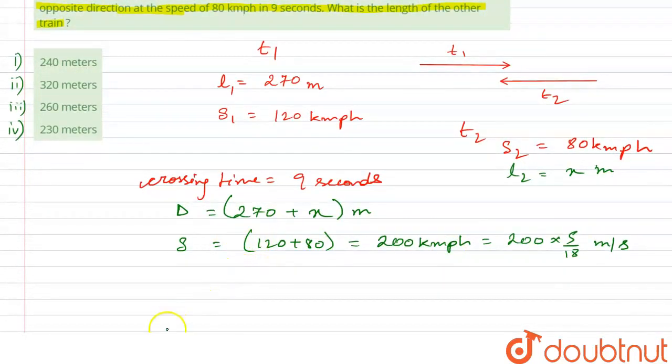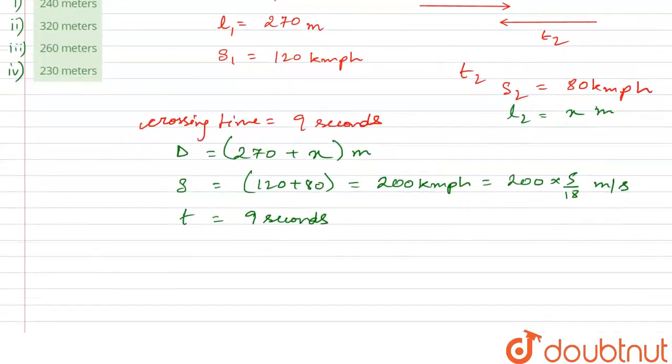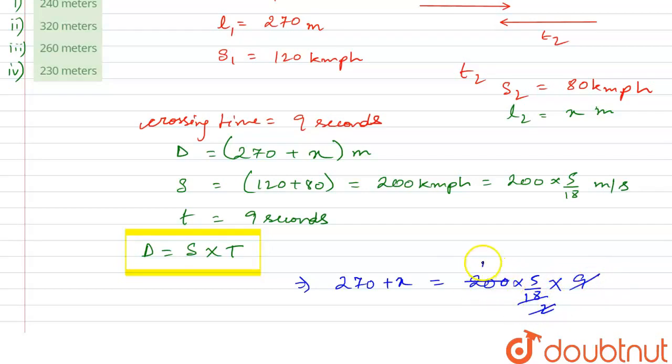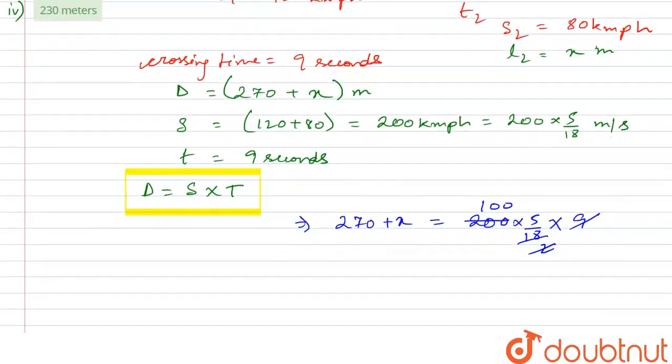Distance equals to speed into time, okay? So, distance equals to speed into time. We can do this here as 270 plus x equals to 500, okay?